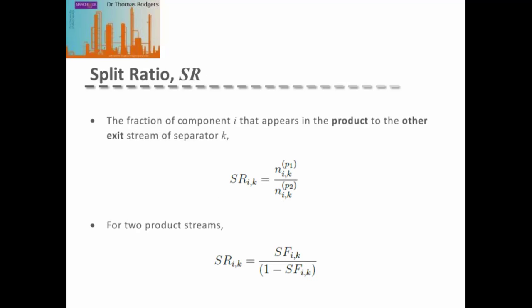Alternatively, we can write the separation as a split ratio between the two products. In this case, our split ratio is given by the amount of our component I in our first product stream divided by the amount of component I in the second product stream.